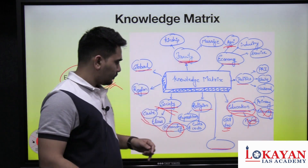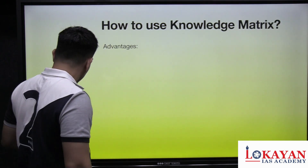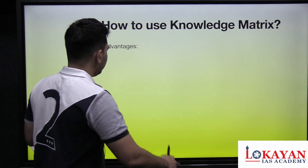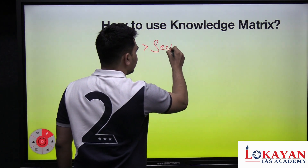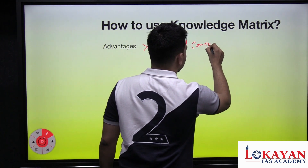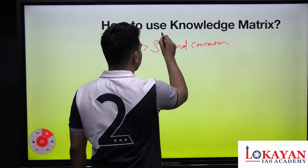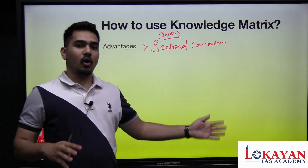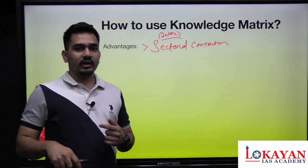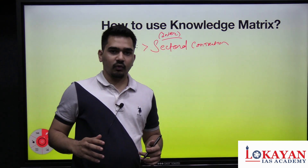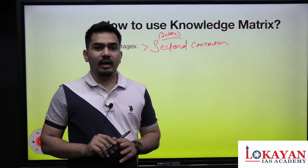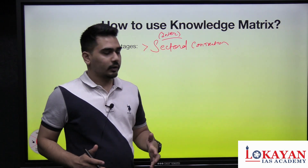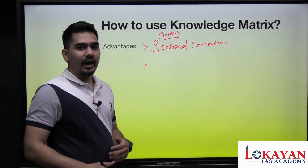So that is the idea behind the Knowledge Matrix: you take one topic from a specific sector and then elaborate it, touching all the dimensions it impacts. Now we can think about a few advantages Knowledge Matrix brings. First, it creates sectoral connections — or intersectoral connections. You take one point and widen it, touching many different sectors which you otherwise would have limited yourself to, had you started writing without a mental map.